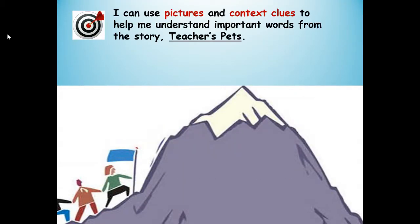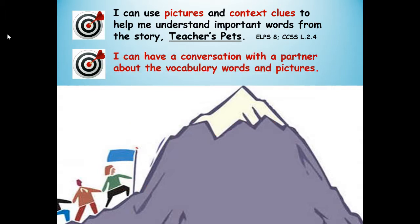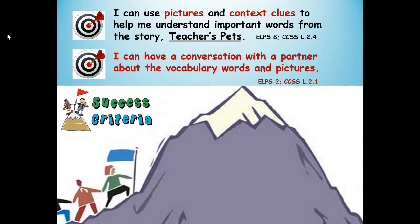Here's our learning target: I can use pictures and context clues to help me understand important words from the story Teacher's Pets. Our second learning target: I can have a conversation with a partner about the vocabulary words and pictures. And if you don't have a partner at home, you can be my virtual partner. Success criteria — that means how will you know you're successful at reaching the learning targets?